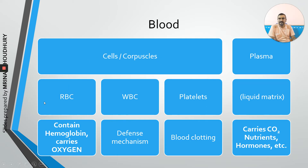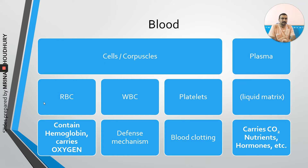RBCs, or red blood cells, are red because they contain a special pigment called hemoglobin. The function of hemoglobin is to carry oxygen. Hemoglobin has two parts: heme, which is the iron part, and globin, which is the protein part. The iron part of hemoglobin binds to oxygen and carries it — that is the main function of hemoglobin in RBCs.